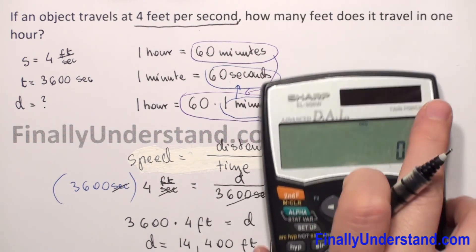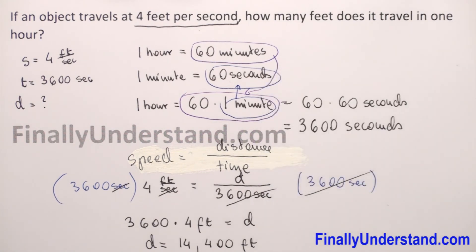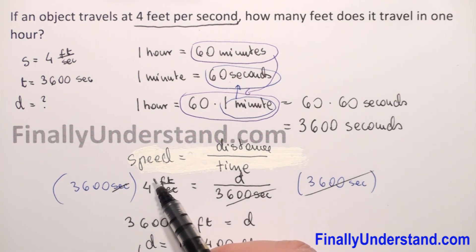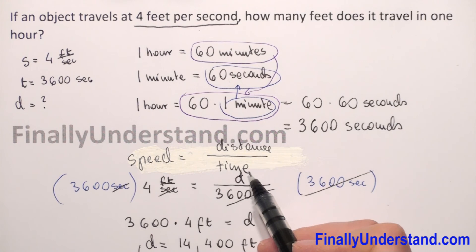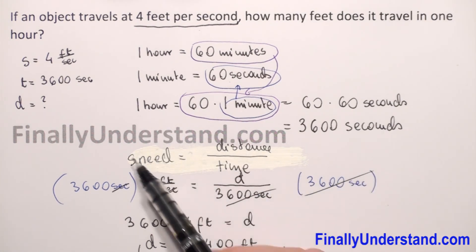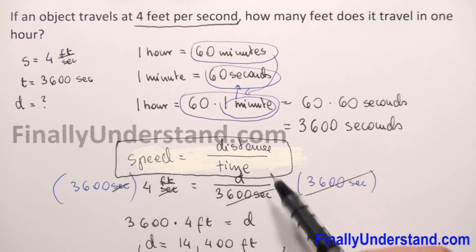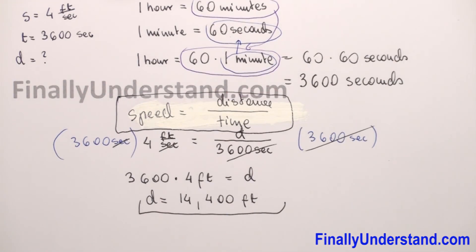Let's check: 3,600 times 4 equals 14,400 feet. So we find the distance the object travels in one hour. We used the formula speed equals distance over time, with the given time of one hour converted to seconds, substituted our given speed and time, and calculated the distance. This is the solution.